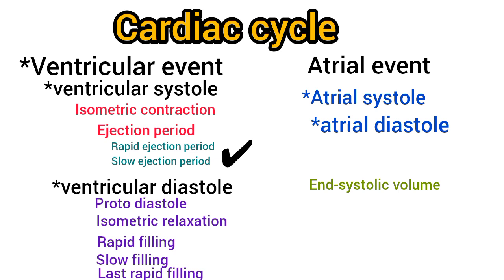The amount of blood remaining in the ventricles at the end of the ejection period is called the end systolic volume. The fraction of end diastolic volume that is ejected out by each ventricle per beat is referred to as the ejection fraction. The next phase is protodiastole, which is the first stage of ventricular diastole. Due to the ejection of blood, the pressure in the aorta and pulmonary artery increases and the pressure in the ventricles drops. When intraventricular pressure becomes less than the pressure in the aorta and pulmonary artery, the semilunar valves close. The protodiastole indicates only the end of systole and the beginning of diastole. The closure of the semilunar valves during this phase produces the second heart sound.